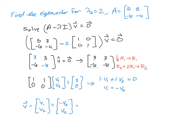And, of course, just like before, we can factor out the V2. It leaves us with negative 1 and positive 1. So our vector corresponding to 2 is negative 1 and 1.